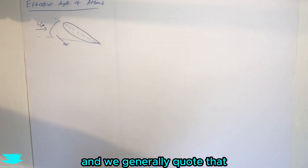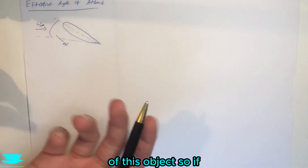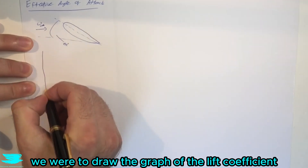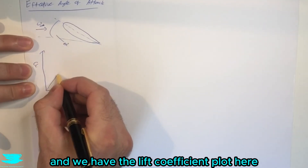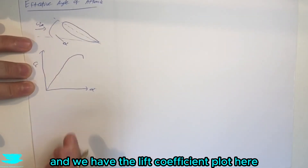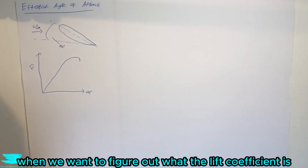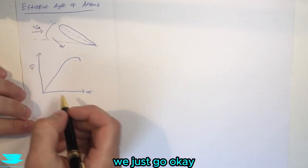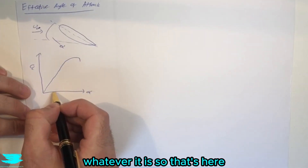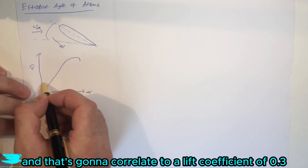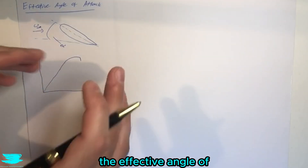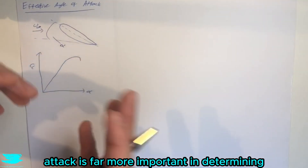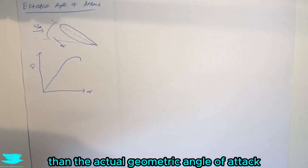We generally quote alpha when talking about the lift coefficient. If we draw the familiar graph of lift coefficient versus angle of attack, we'd say the angle of attack is three degrees, which correlates to a lift coefficient of 0.3 or whatever it is. But that's not strictly true. In reality, the effective angle of attack is far more important in determining airfoil performance than the actual geometric angle of attack.